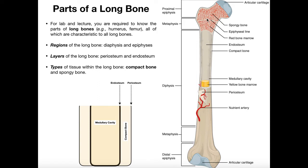All long bones have certain characteristics. We're going to group the parts of a long bone in certain ways. The first way we can divide up these terms are regions — regions are really just fractions of the length of the long bone itself. We can be talking about the ends of the long bones, the middle region which is the shaft, and there's even a smaller region in between those. The two major regions are the epiphyses and the diaphysis.